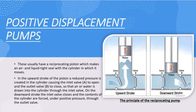First we will learn about the positive displacement pump, or the reciprocating pump. In a reciprocating pump, as you can see, there is a piston assembly which does an upward stroke and a downward stroke. In the upward stroke, it creates a low pressure region inside the cylinder area, which causes the high pressure fluid to open the NRV — or non-return valve A — and rush the fluid inside the cylinder area.